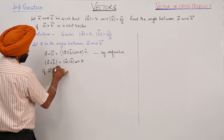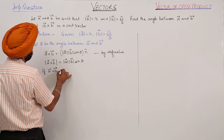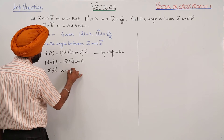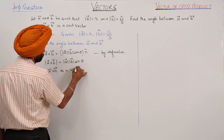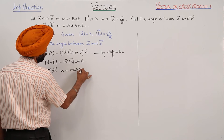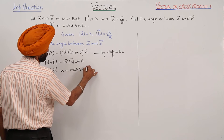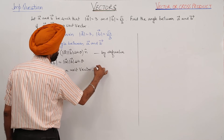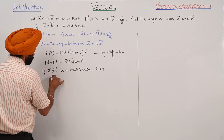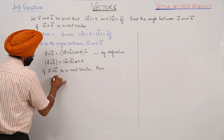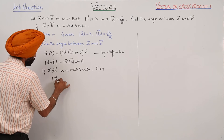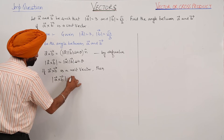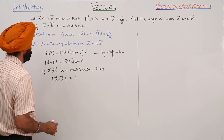If the cross product of vector A and vector B is a unit vector, then the magnitude of the cross product of the two vectors is equal to 1.